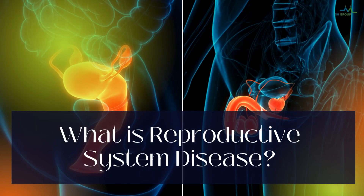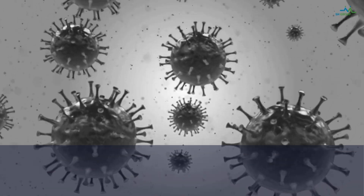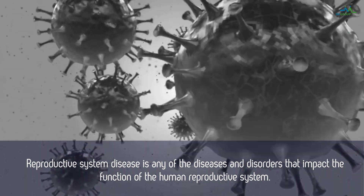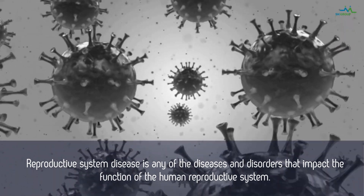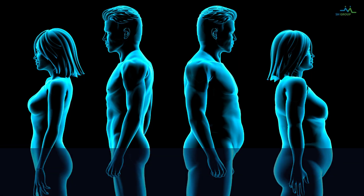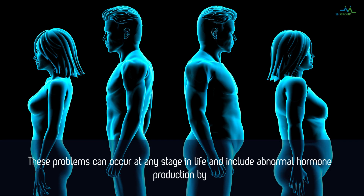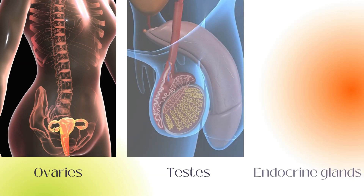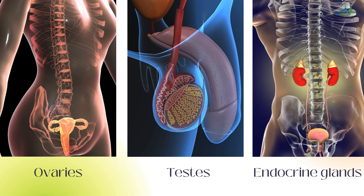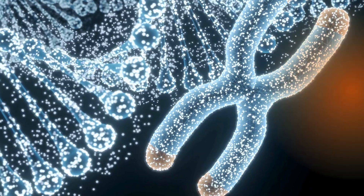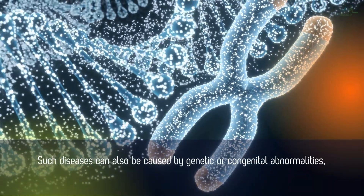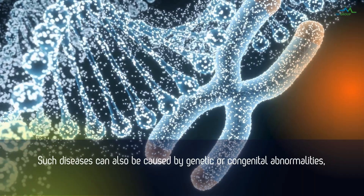What is Reproductive System Disease? Reproductive System Disease is any of the diseases and disorders that impact the function of the human reproductive system. These problems can occur at any stage in life and include abnormal hormone production by ovaries, testes, endocrine glands, pituitary, thyroid, and adrenals. Such diseases can also be caused by genetic or congenital abnormalities.